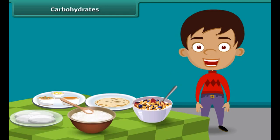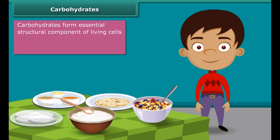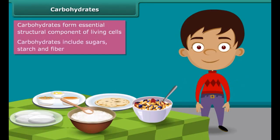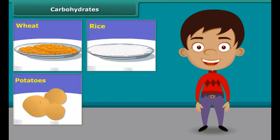First, carbohydrates. Carbohydrates form an essential structural component of living cells; they are the main source of energy for animals. Carbohydrates include sugars, starch, fiber etc. They are mainly found in wheat, rice, potatoes, corn and maize.